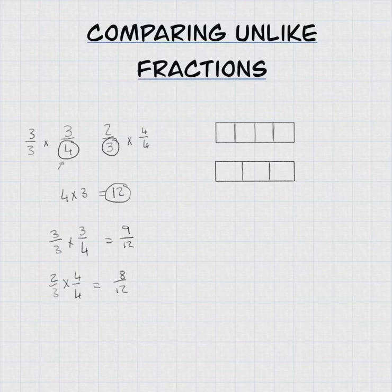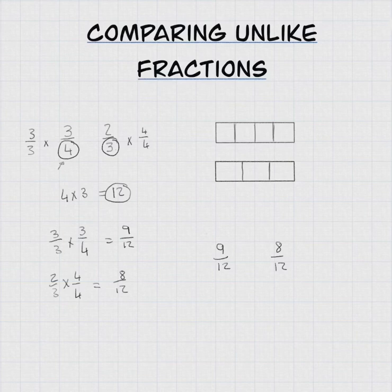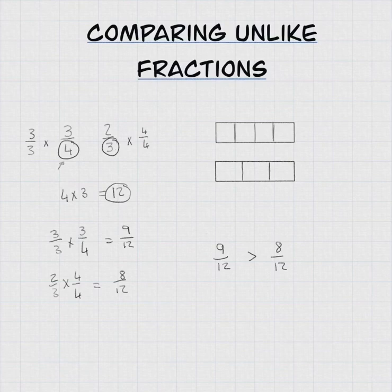This means that 3 quarters is equal to 9 twelfths, and 2 thirds is equal to 8 twelfths. All I've done here is found equivalent fractions. Now I've got 3 quarters, which is 9 twelfths, and 2 thirds, which is 8 twelfths. Can I compare these numbers? Of course. I know that 9 is bigger than 8, and I've got twelfths for both of them, so 9 twelfths is going to be greater than 8 twelfths.